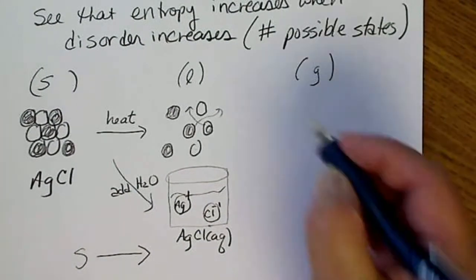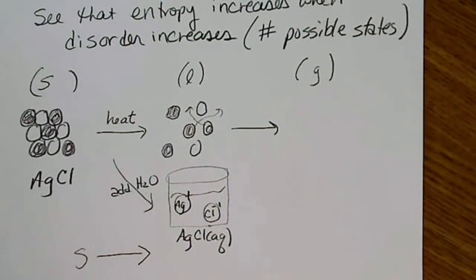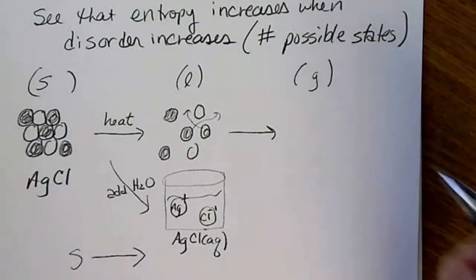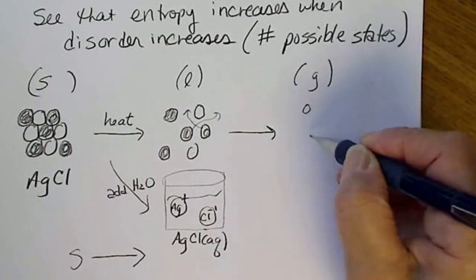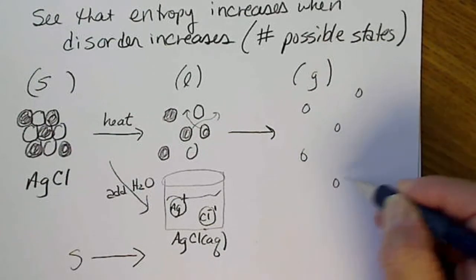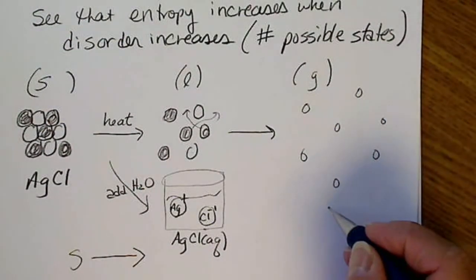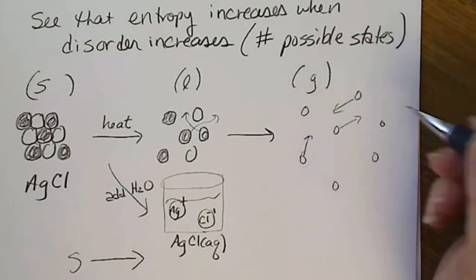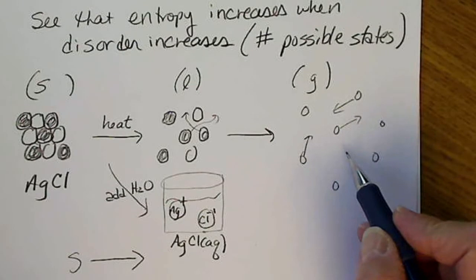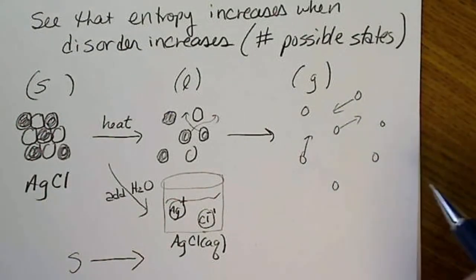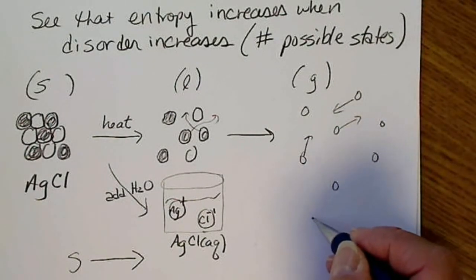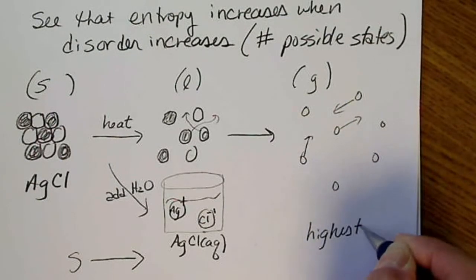We could heat silver chloride to a very high temperature and turn it into a gas. A gas takes up so much space and each gas particle is in constant motion. Every time we take a molecular-level photograph of a gas we get a different picture, so a gas always has the highest entropy.